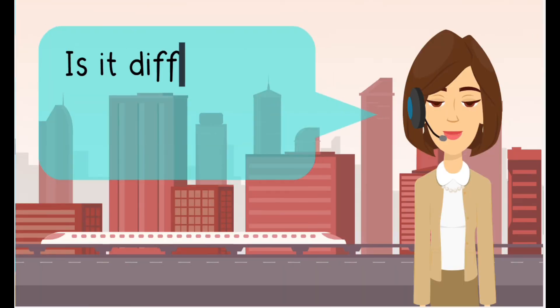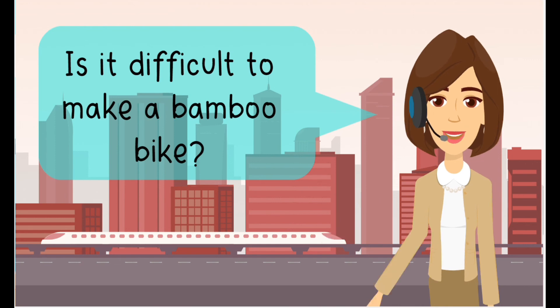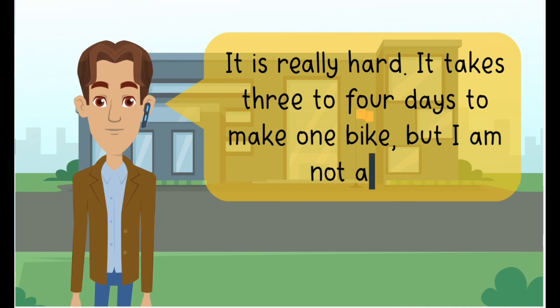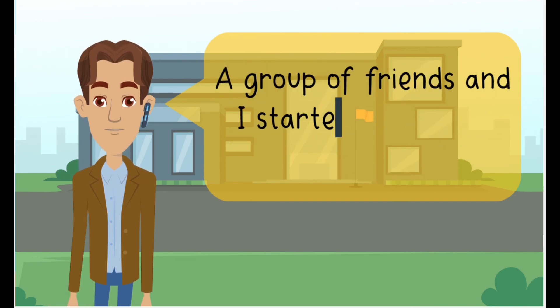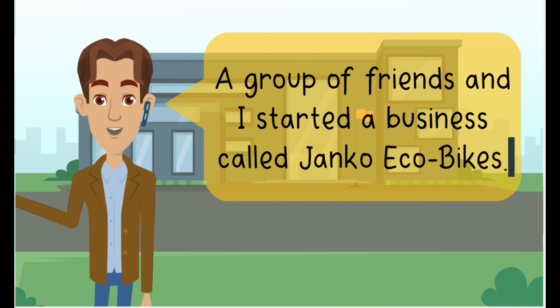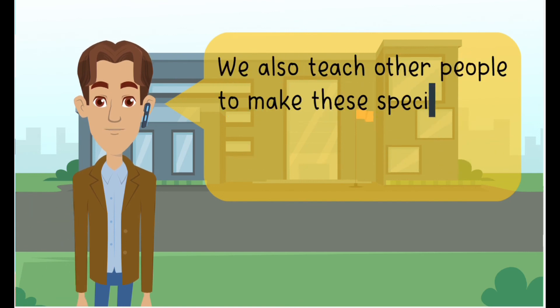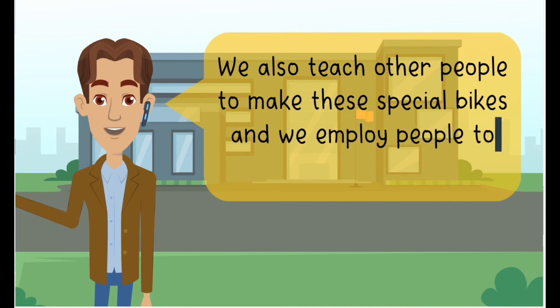Is it difficult to make a bamboo bike? It is really hard. It takes three to four days to make one bike. But I am not alone. A group of friends and I started a business called Janko Eco Bikes. We also teach other people to make these special bikes and we employ people to grow bamboo in Tingo Maria.